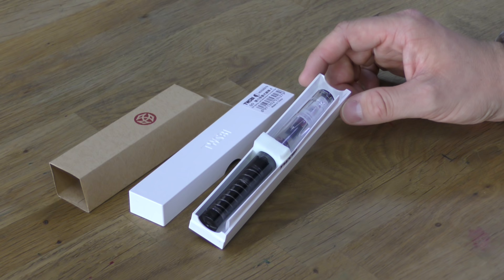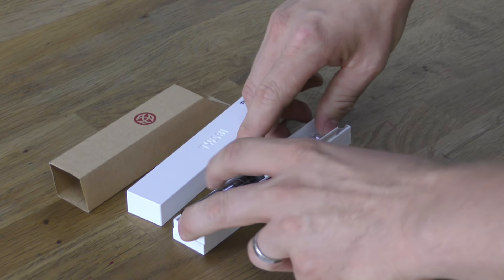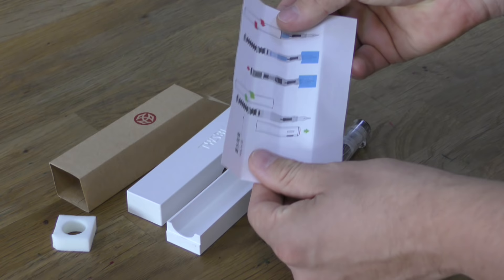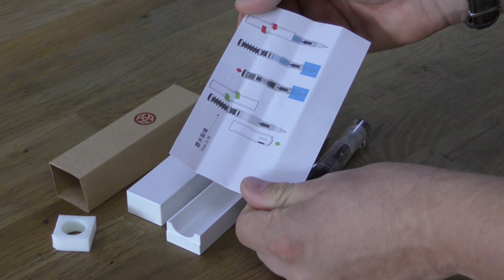So the box gets removed and the pen is there inside, being held in place by this little foam square that has a hole cut in the middle of it to hold the pen. So that slides off and there is the pen. It has a little instruction leaflet as the other TWSBI models do. This one is a little bit more simple because the pen is a bit more simple.